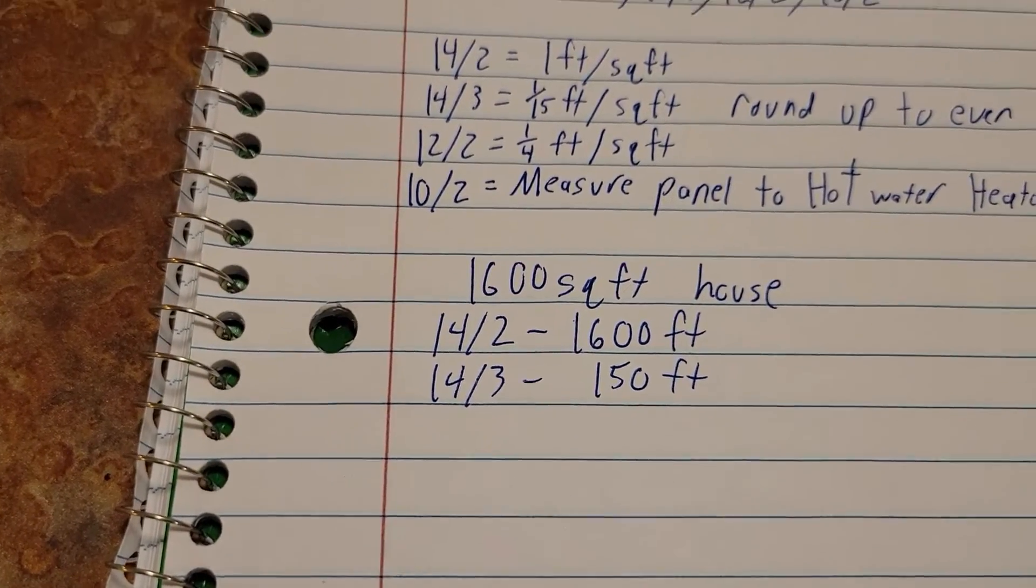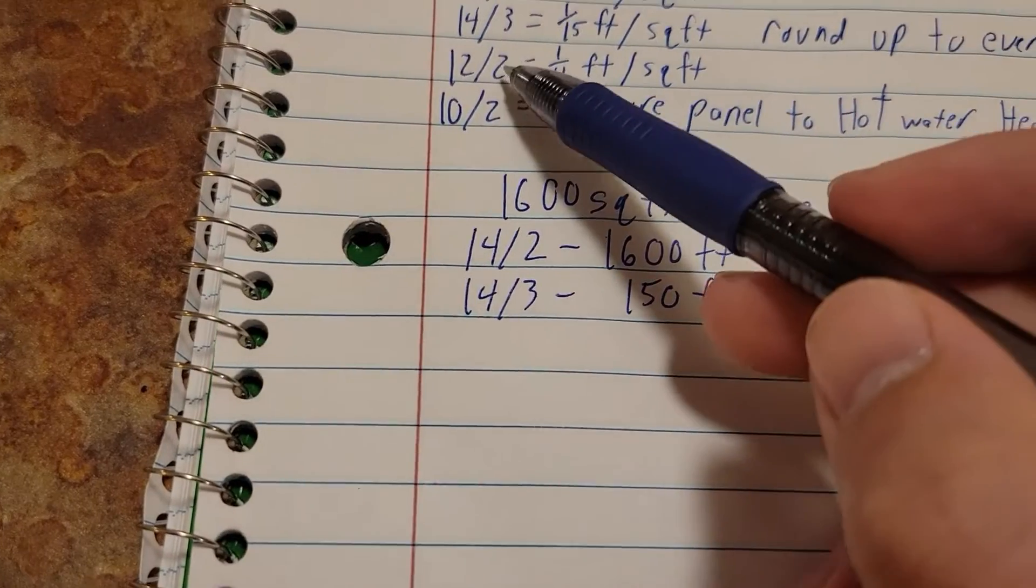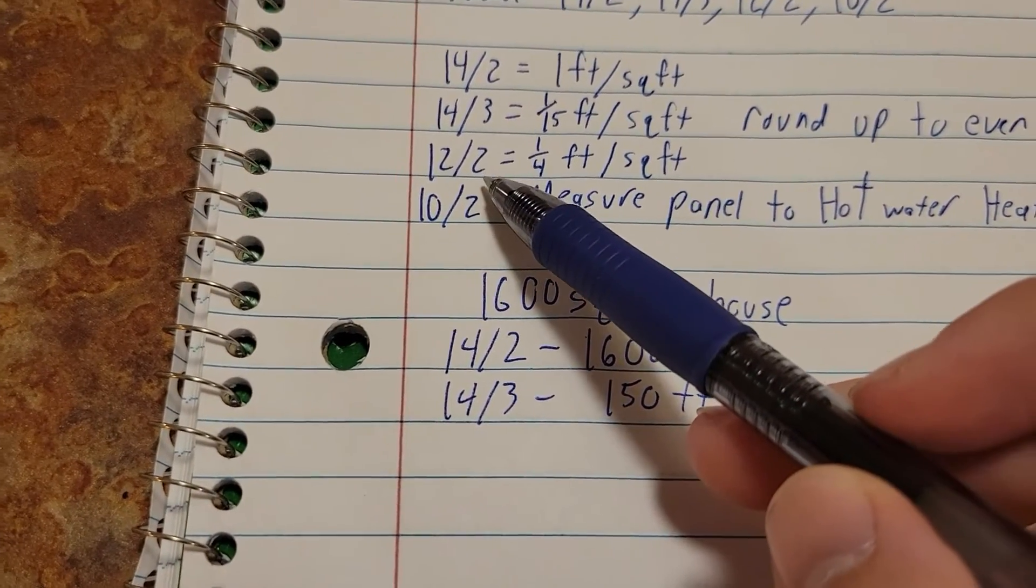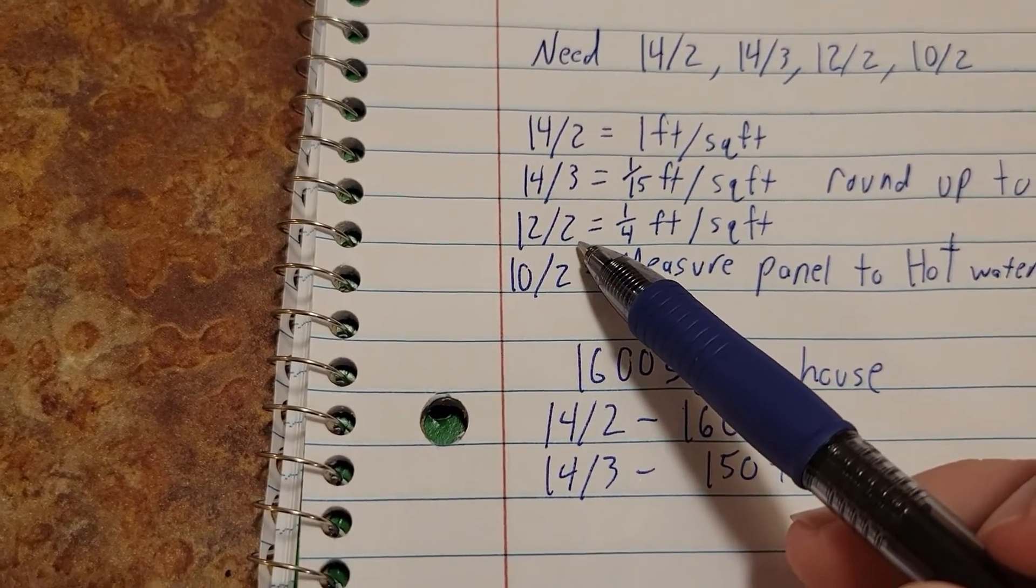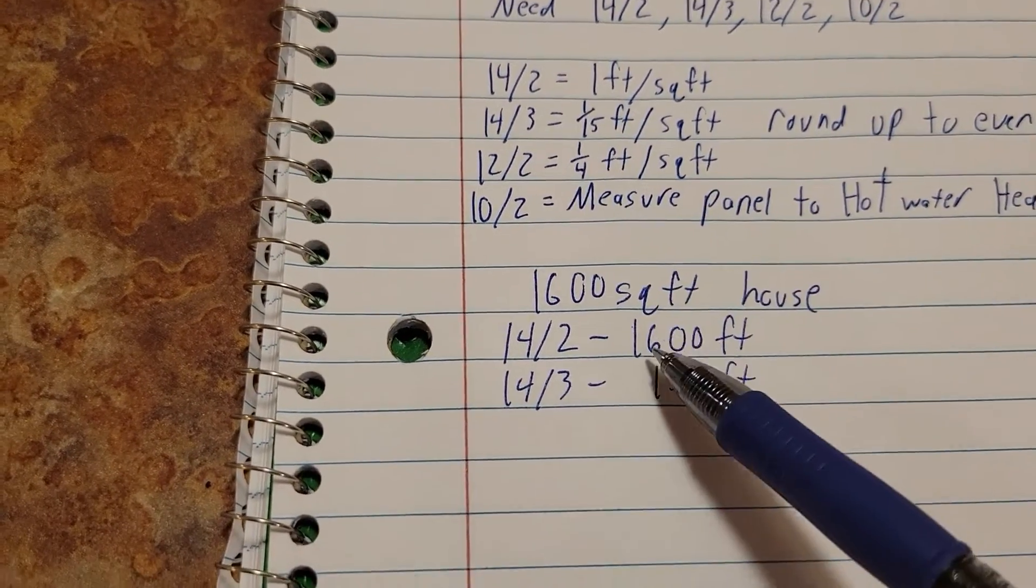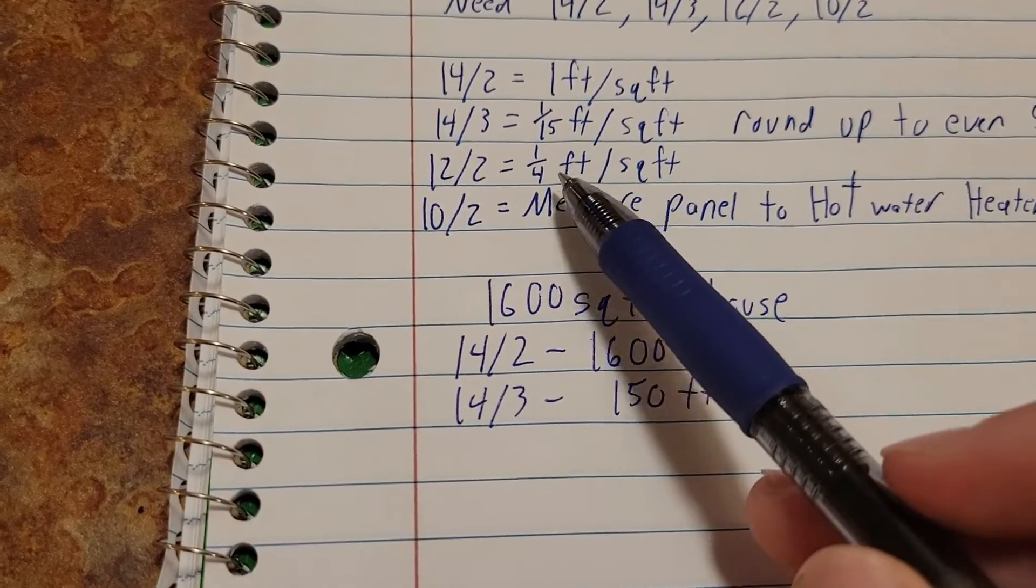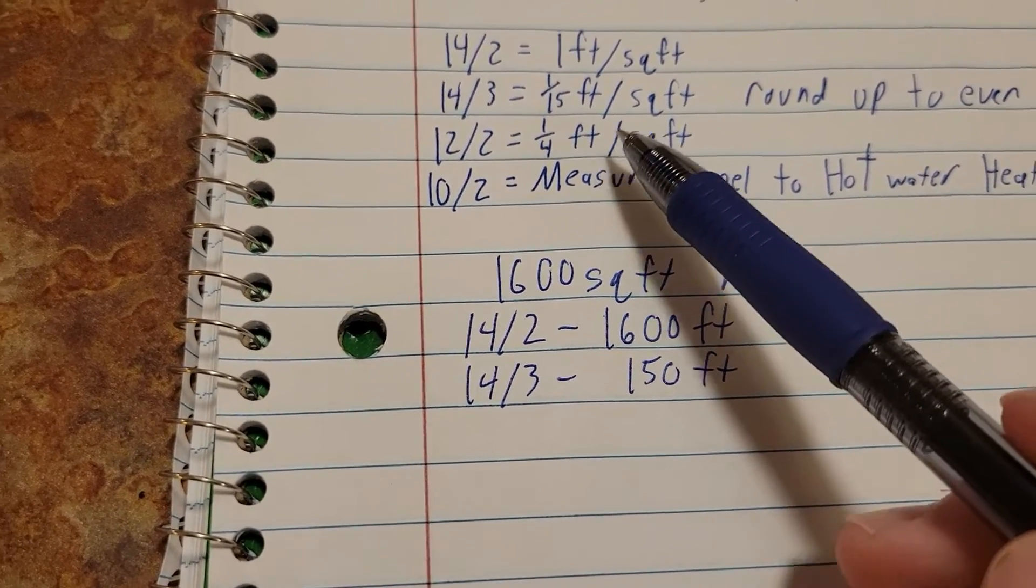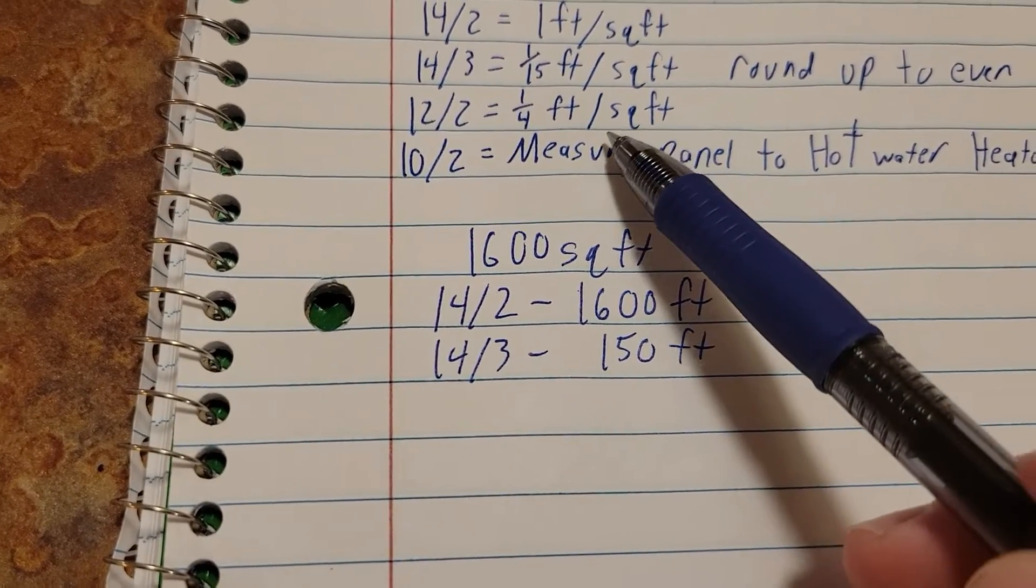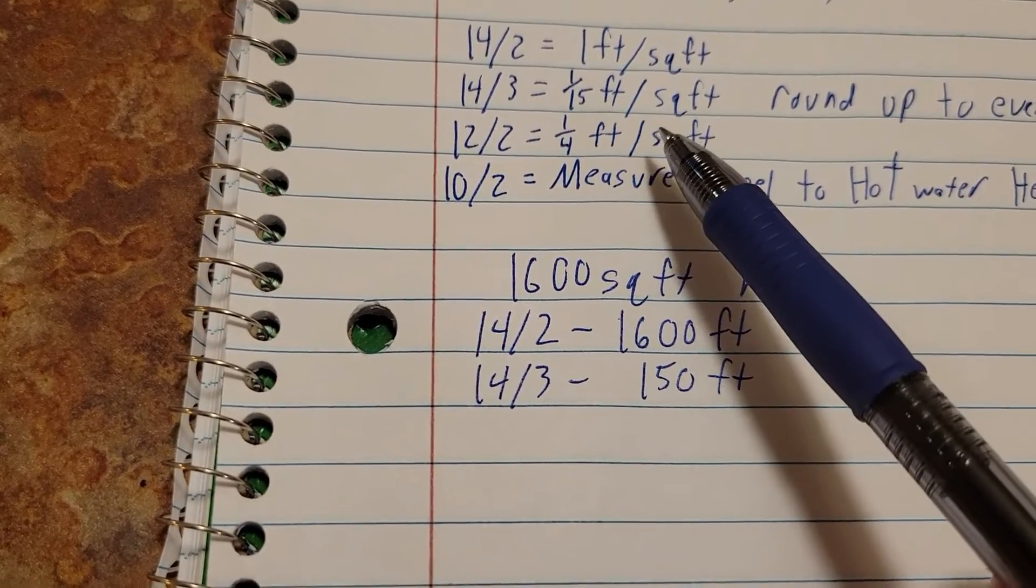Now our 12/2 is going to cover a lot of our dedicated appliance circuits. I believe your washing machine is going to need a dedicated 20 amp circuit, and your microwave if it's a built-in is going to need a dedicated 20 amp circuit. But also your kitchen has to have one 20 amp circuit for countertop plugs and small appliances.